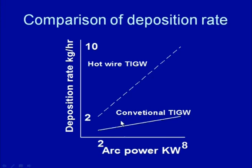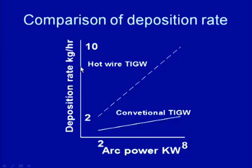This higher deposition rate is possible because much of the heat required for melting the filler material is reduced when the hot wire GTAW process is used. Since the preheated wire requires very little heat from the welding arc, the melting rate of the filler wire becomes much greater than in conventional GTAW. Increase in arc power causes a significantly greater increase in the deposition rate when using the hot wire GTAW process.